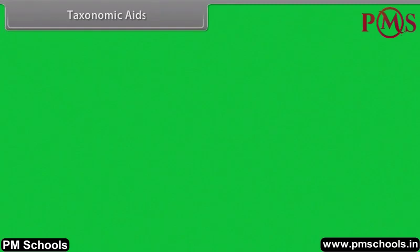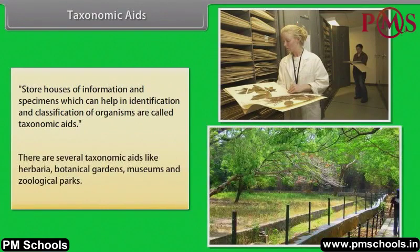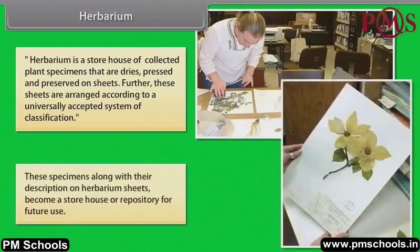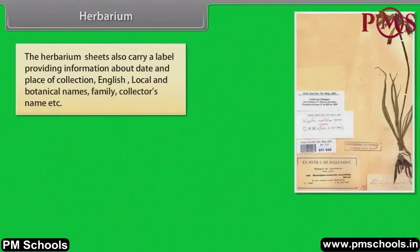Storehouses of information and specimens which can help in identification and classification of organisms are called taxonomic aids. There are several taxonomic aids like herbaria, botanical gardens, museums and zoological parks. A herbarium is a storehouse of collected plant specimens that are dry, pressed and preserved on sheets. These sheets are arranged according to a universally accepted system of classification. These specimens, along with their description on herbarium sheets, become a storehouse or repository for future use.